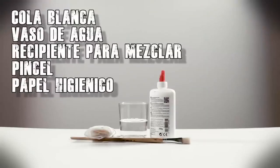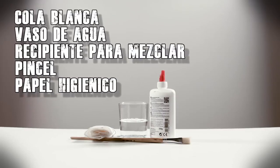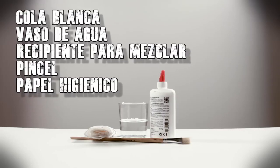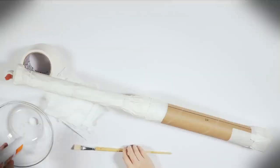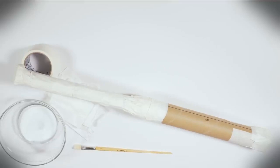Now the second step, you'll need white glue, a glass of water, a mixing bowl, a brush, and toilet paper. In a bowl, add two parts of white glue and one part of water to harden the entire structure. Stir with a brush.